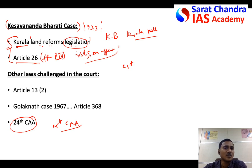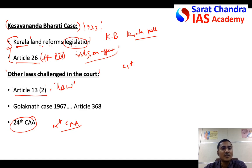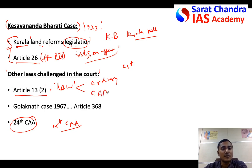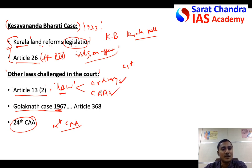In the second part of your answer, briefly write about the other cases involved. Article 13(2) of the Constitution of India clearly says that any law that takes away the fundamental rights of citizens of India would be void. But the question was: does this 'law' consist of only ordinary law made by Parliament, or does it also include constitutional amendment acts? This question was clarified by the Supreme Court in the Golaknath case of 1967. In that case, the Supreme Court clearly mentioned that this law includes not only ordinary law but also constitutional amendment acts — meaning if Parliament makes any amendment that takes away fundamental rights, such an amendment will be void.